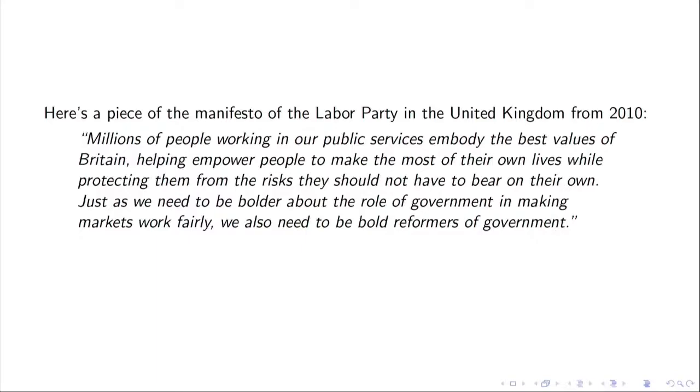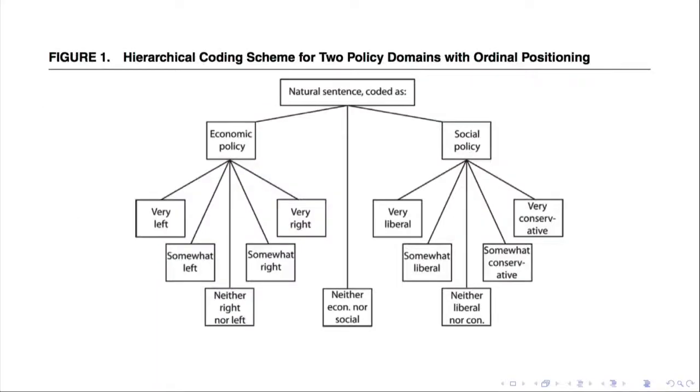They wanted to code these sentences—whether they were about economic policy, social policy, or neither. If they were about economic policy, they wanted to code whether they were very left, somewhat left, neither left or right, somewhat right, or very right. Likewise, if they were social policy, they wanted to also label them on this five-point scale.